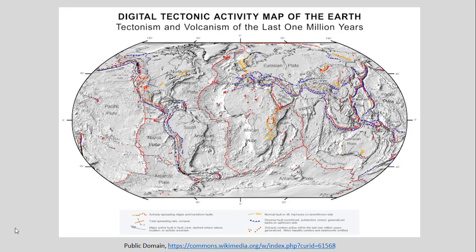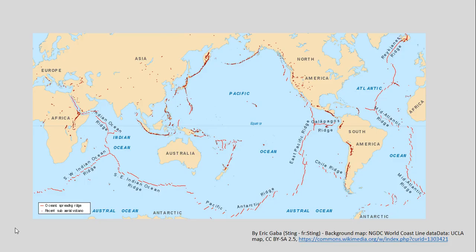We kind of left off talking about tectonic plates and mountain building in a previous video with this slide, just showing the different distribution of volcanoes and earthquakes. Here's a different map showing specifically just where we have different volcanic settings — all different types of volcanoes.